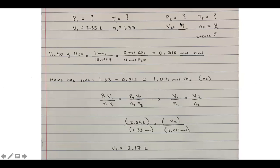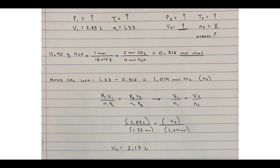We weren't told anything about our pressures or our temperatures, whether at the beginning or at the end, so I wrote a question mark next to all of those. But I was told my initial volume of my piston was 2.85 liters and my initial number of moles was 1.33. My volume 2 is unknown — I underlined it because that's what we want to solve — and my N2 I wrote as x.